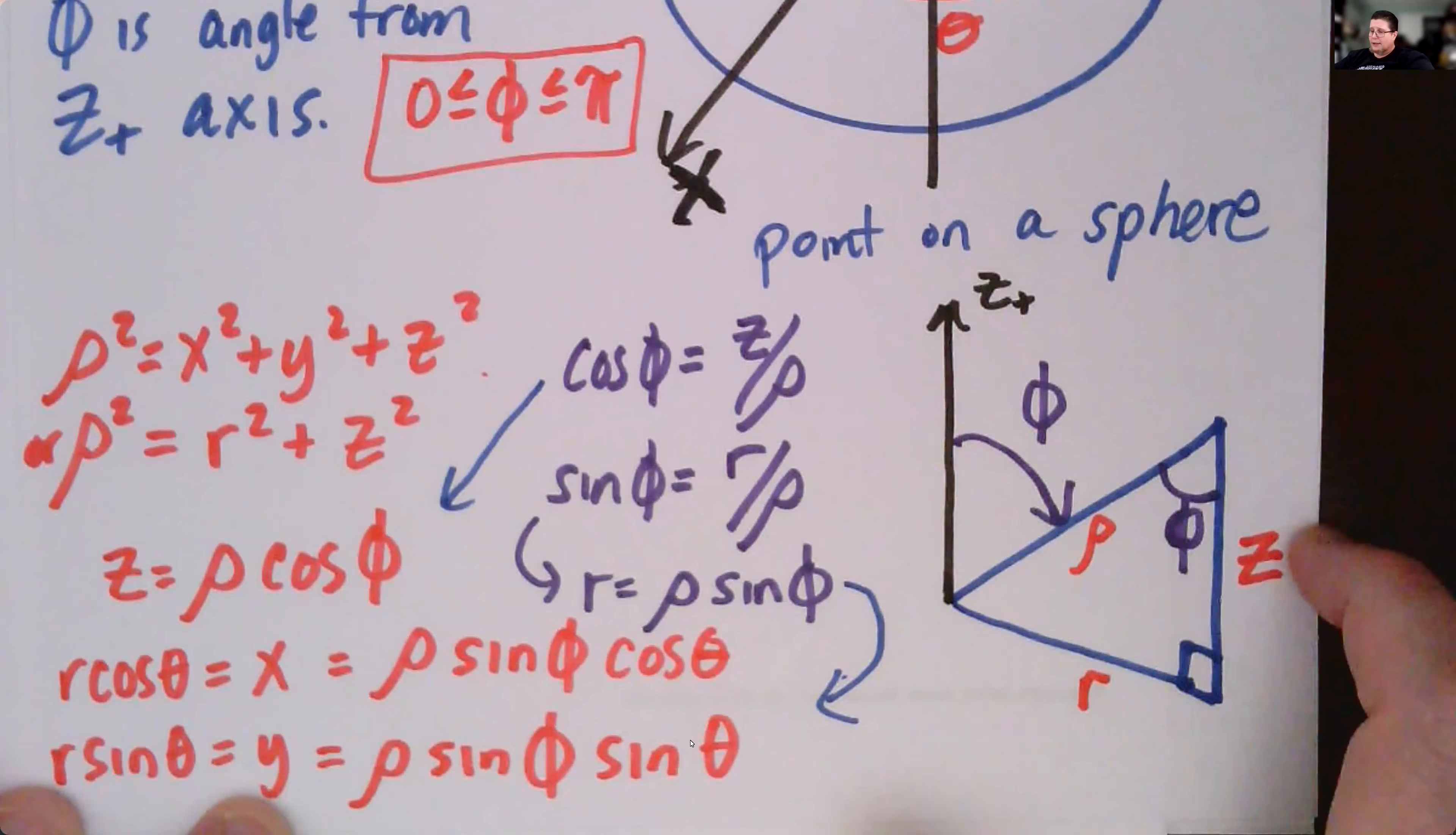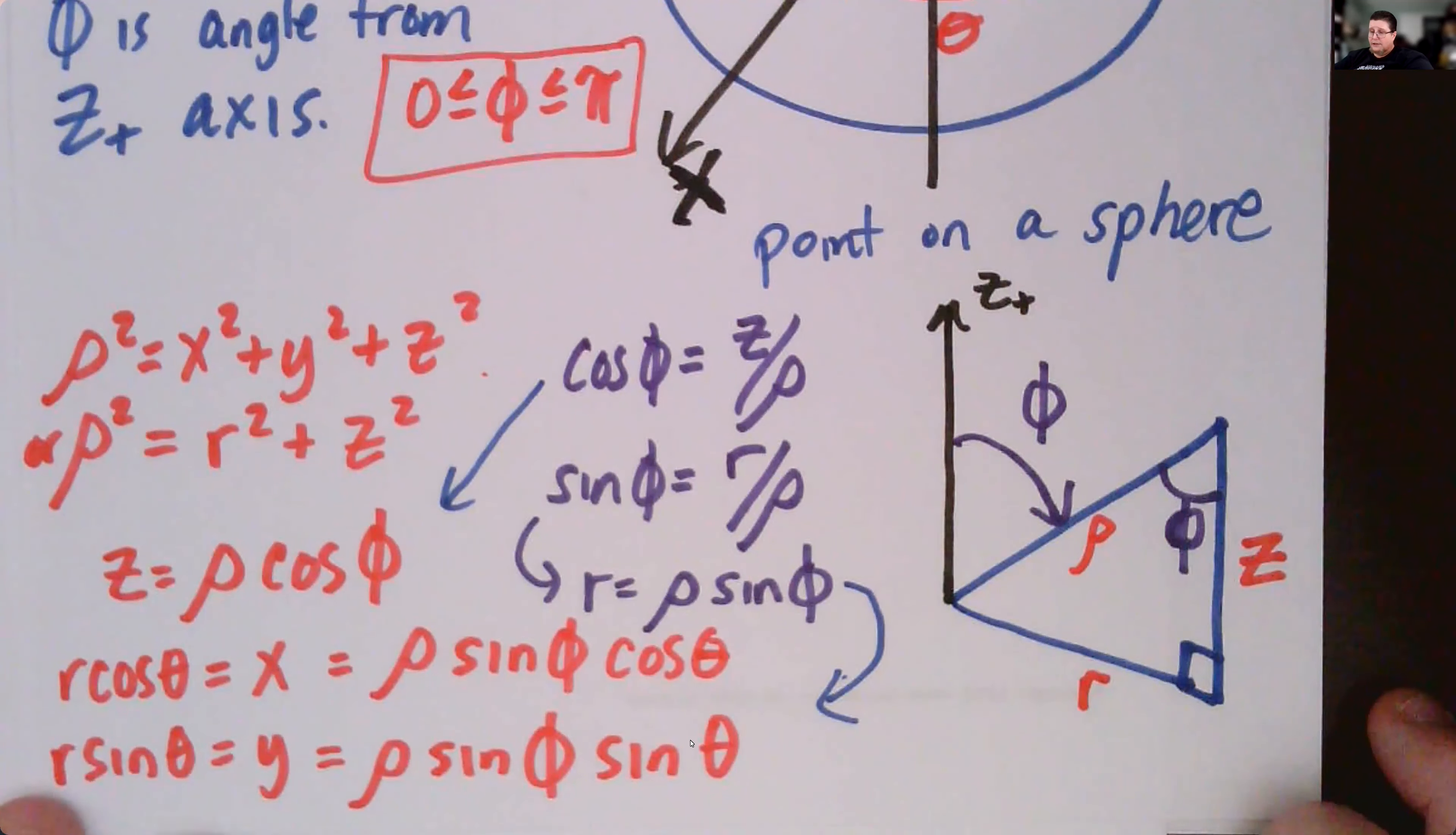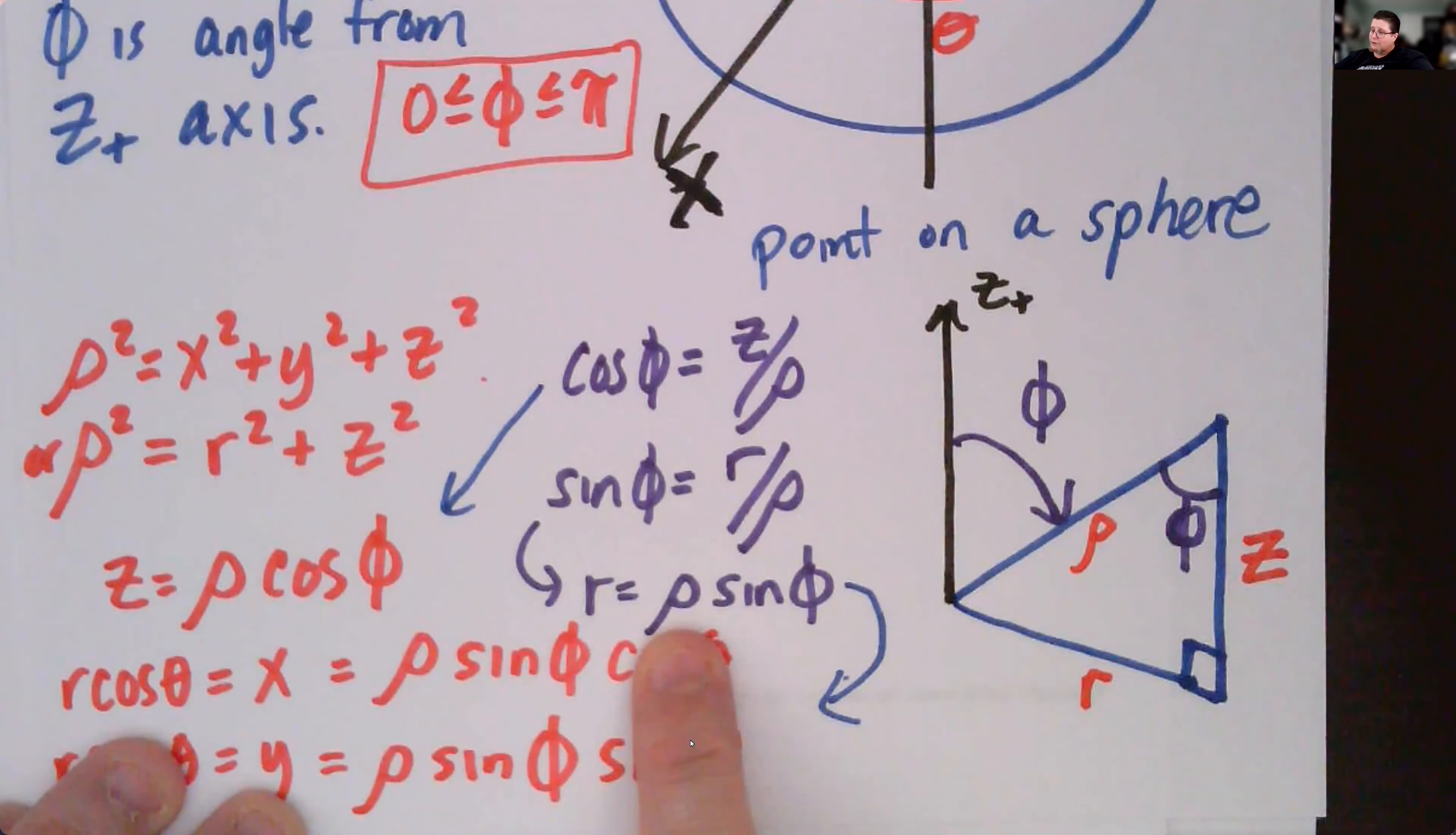is adjacent over hypotenuse, z over rho, and sine phi is opposite over hypotenuse, or r over rho. The cosine phi statement, if we solve for z, we get z equals rho cosine phi. And if I solve for r in the sine phi equation, I get r equals rho sine phi.